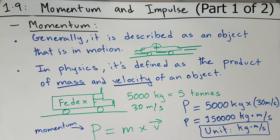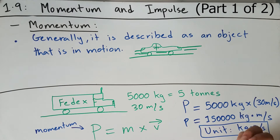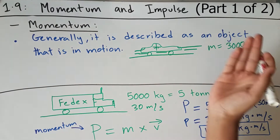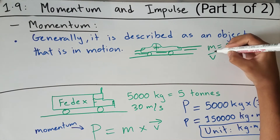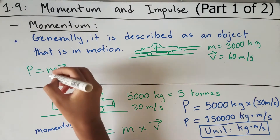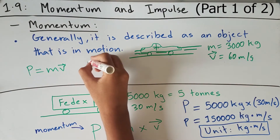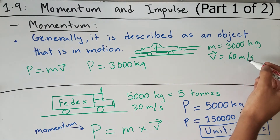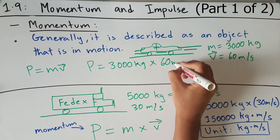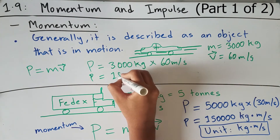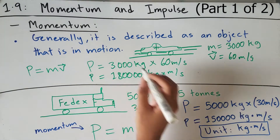Now let's jump back to the car we first drew. Let's say it had a mass of 3,000 kilograms, and its velocity was in the rightwards direction — so a positive velocity of 60 meters per second, so it's traveling really fast. Using the momentum formula, the mass is 3,000 kilograms and the velocity is positive 60 meters per second, giving us 180,000 kilograms times meters per second.